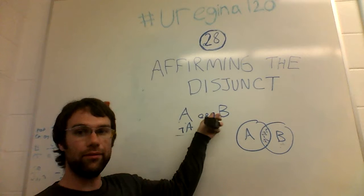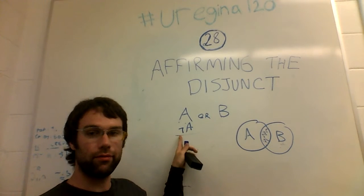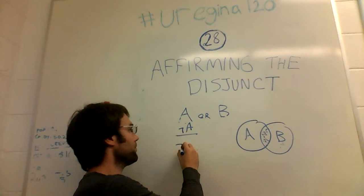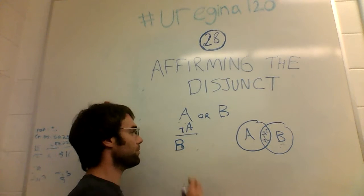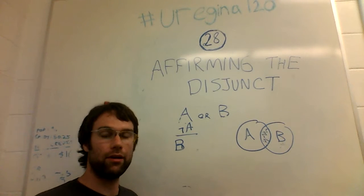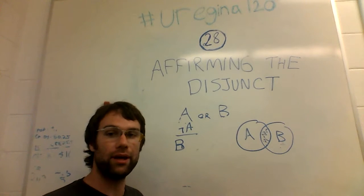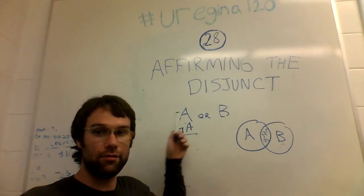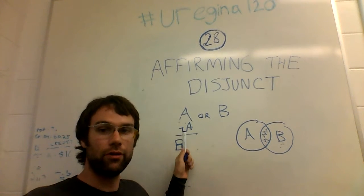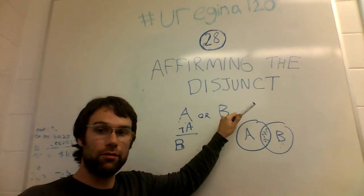A or B for the first premise, not A for the second premise, and from that you can conclude B. It is logical to conclude B. If you have first decided that either A or B is true, and A is not true, then the only thing left to conclude is that B is true.